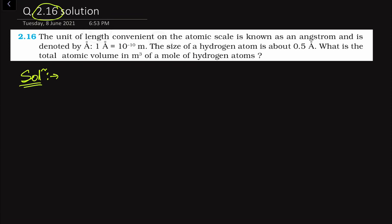First of all, let us understand what the problem says. The unit of length convenient on the atomic scale is known as the angstrom. This is the unit of length in atomic scale — whenever we want to measure some quantity at the atomic scale, this angstrom unit is used. It is denoted by the angstrom symbol, and one angstrom is equal to 10 to the power minus 10 meters.